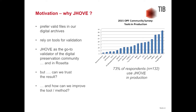I hope everyone agrees now that validation is an important task. But why JOV? We clearly prefer valid files in our digital archive and have to rely on tools for validation because manual validation would never scale. JOV is the go-to validator for the digital preservation community. This was somewhat proven by the 2015 OPF community survey — with 132 respondents, JOV came out as the second most popular tool, with 73% saying they use it in production.